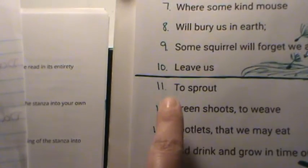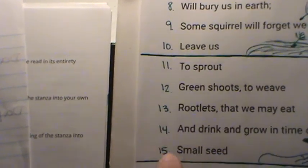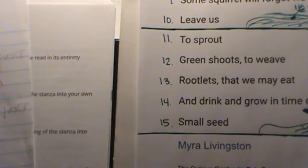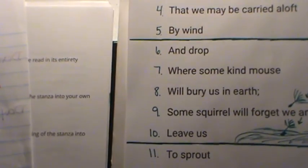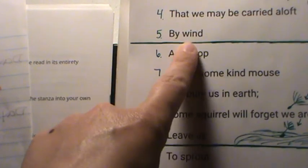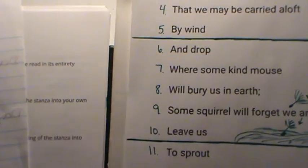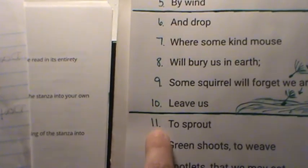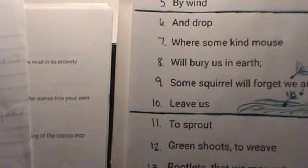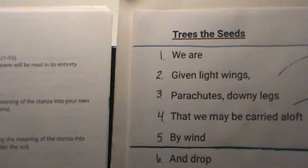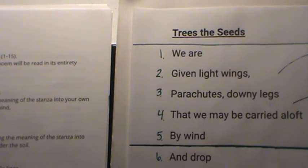Then continuing: 6, 7, 8, 9, 10, 11, 12, 13, 14, 15 — and that last line is the author so we just leave that at the bottom. Go ahead and number those 1 through 15, then draw a line all the way across your page between 5 and 6, and draw another line all the way across between 10 and 11. That's the first part of your task.